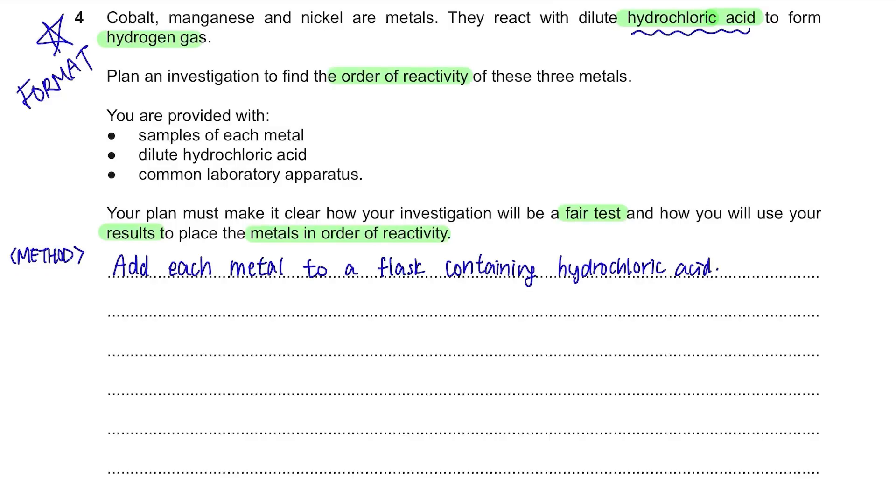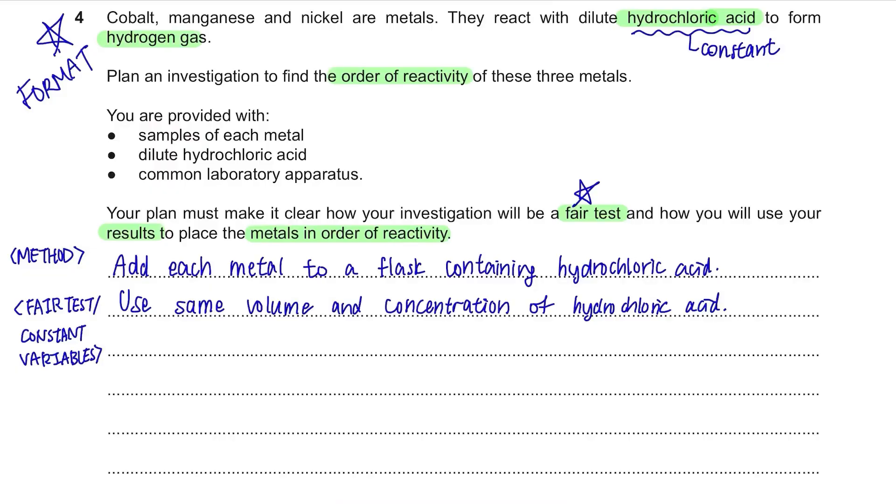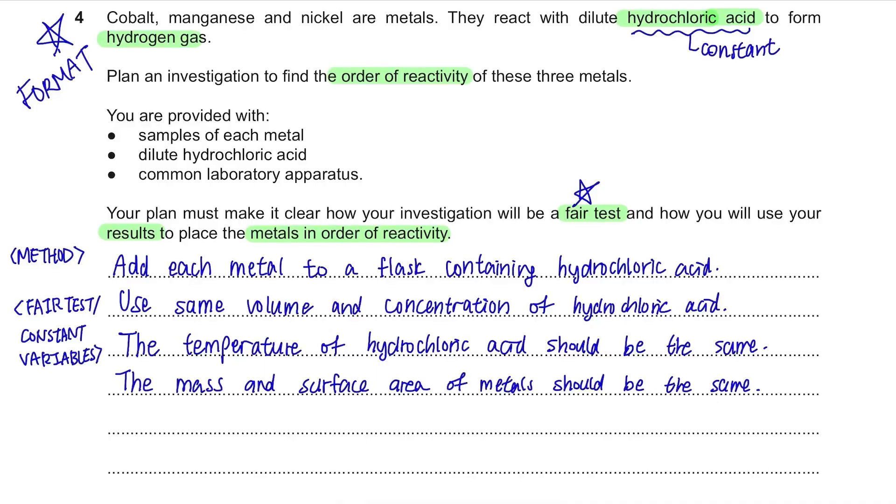Then write which factors you're going to keep constant in order to carry out a fair experiment. The volume and concentration of hydrochloric acid added should be the same for cobalt, manganese and nickel. The temperatures may affect the rate so it should be the same. The mass and the surface of the metals must be the same as well. So whatever that may affect the rate of reaction, other than the type of metal need to be kept constant.